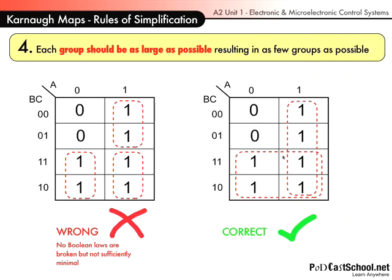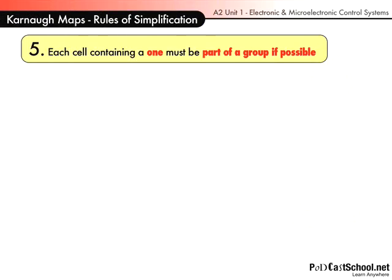Whereas this one, well, this four here, that's just A, isn't it? And this one, well, that's just B. So the actual minimized expression from the Karnaugh Map being grouped like this is A or B, much more simple than this. So I've said that no Boolean laws are broken, but it's not sufficiently minimal. It's still wrong to do it that way.